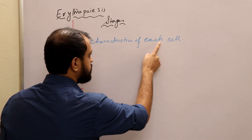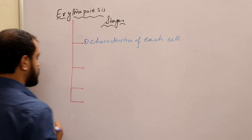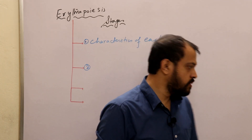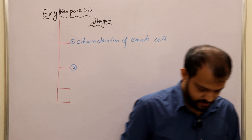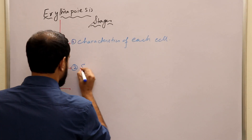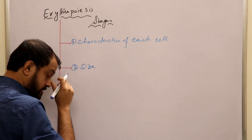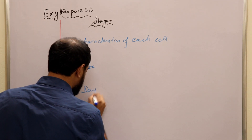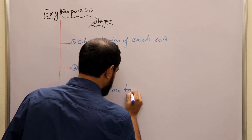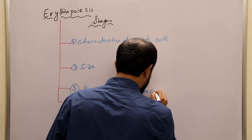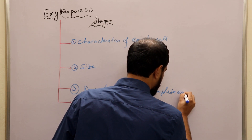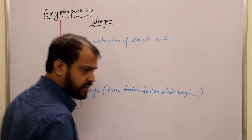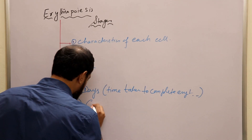Number one is characteristics of each cell. Number two is size of the cells. Third point: time taken to complete erythropoiesis. And the fourth one is the control of erythropoiesis.